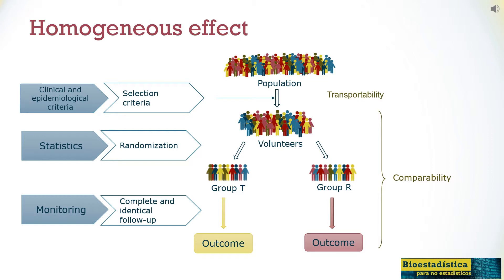Of course, the availability of resources and the preferences of the patients will determine the final decision. Now, these effects observed in certain characteristics — do they also apply to other conditions? An isolated study should discuss transportability. But a systematic review can observe and quantify this heterogeneity of the effect.